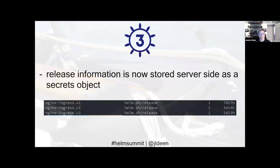Release information is now stored server-side as a secrets object. Here's an example with Nginx: we deployed an Nginx release and updated it three times — you'll see those release markers V1, V2, V3 in the secret information. The command to view this is kubectl get secrets.